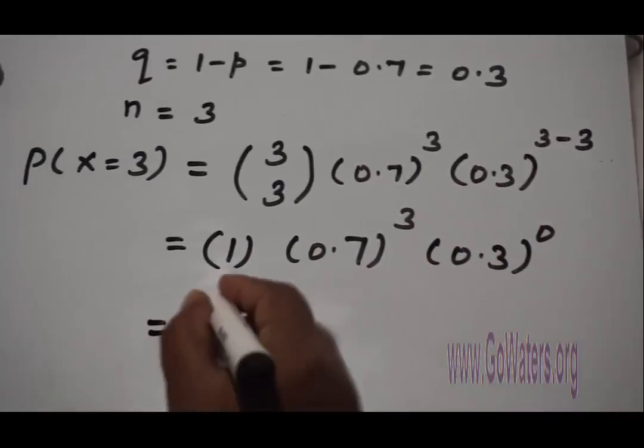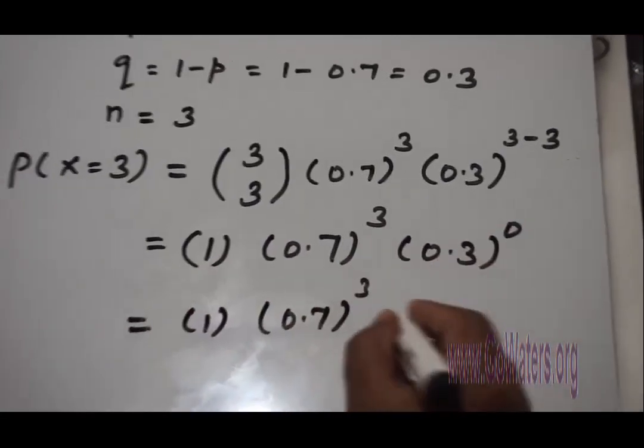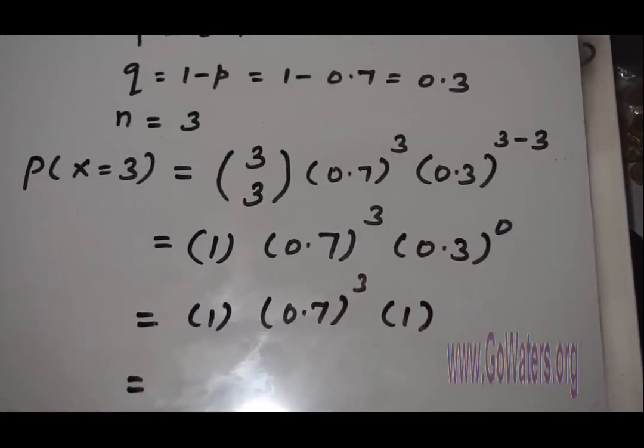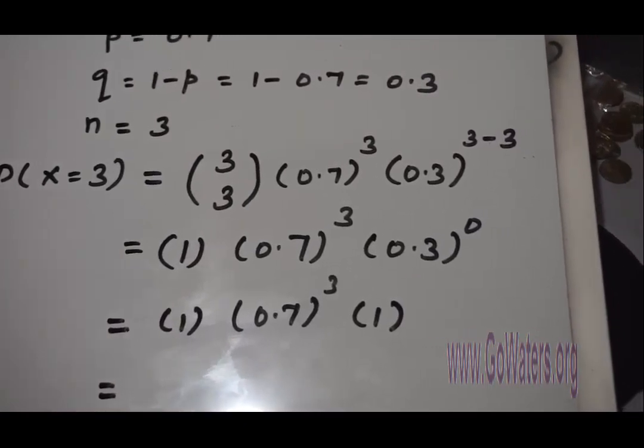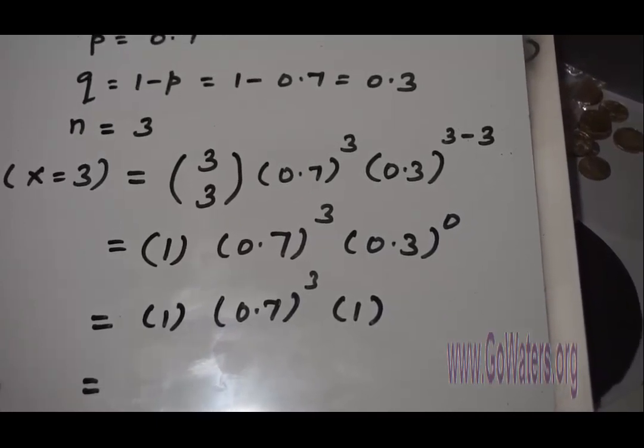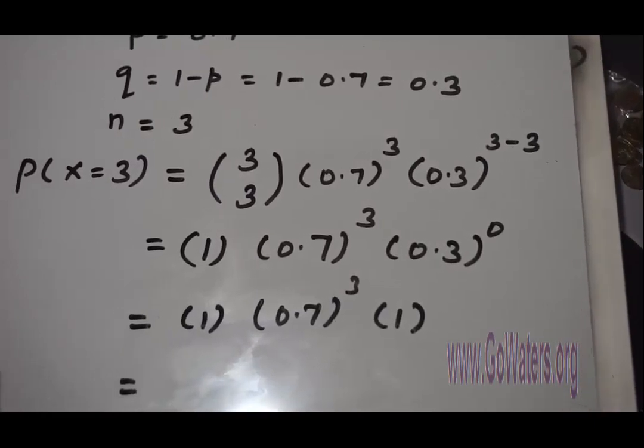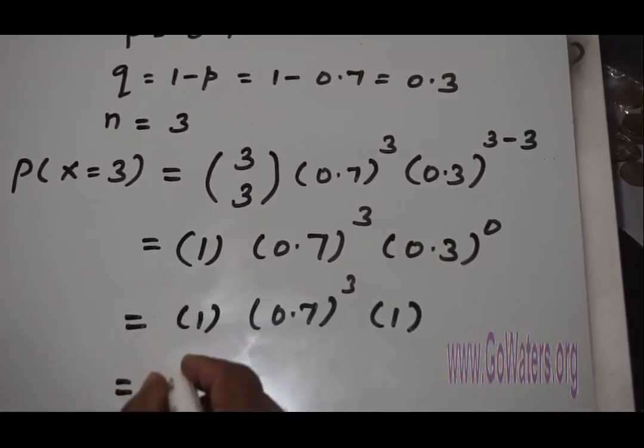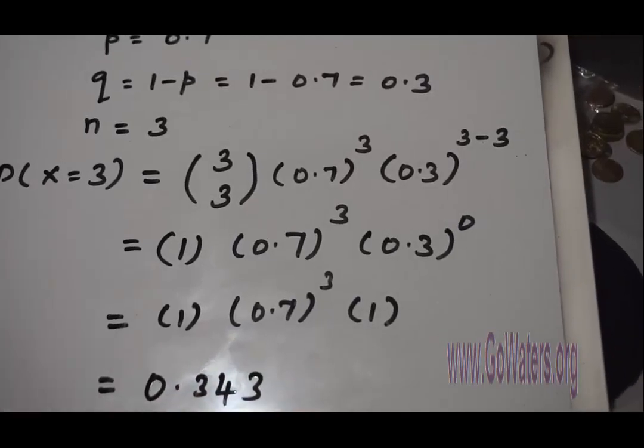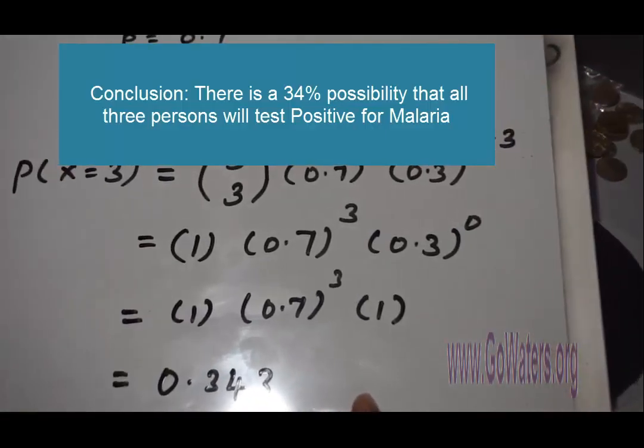So this will be 1, 0.7 cubed, and anything to the power 0 is 1 again. So this will be 0.7 to the power 3. So it will be 0.343. That's a 34% chance that all 3 patients will test positive for malaria.